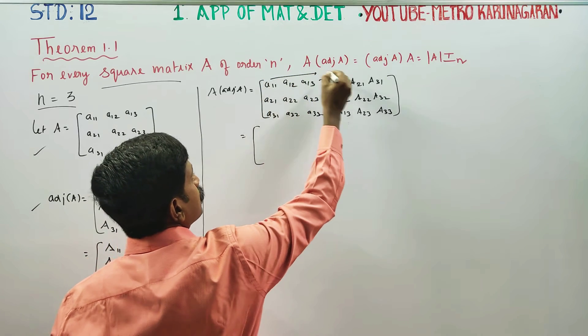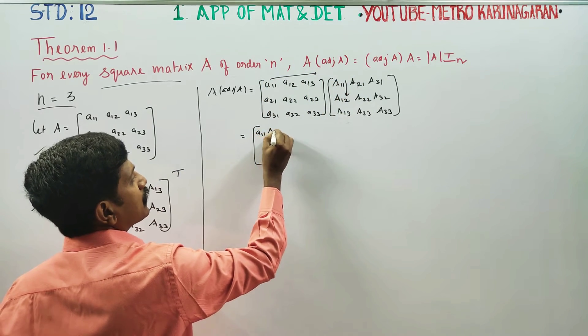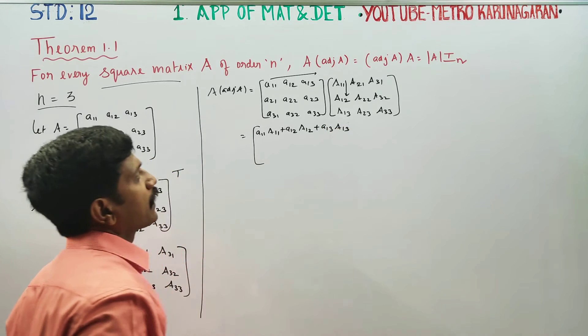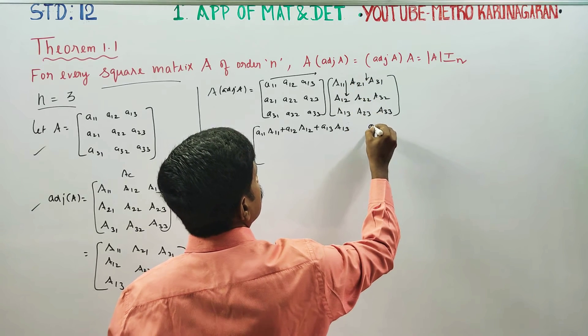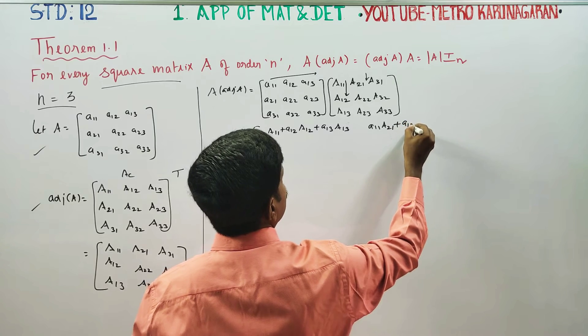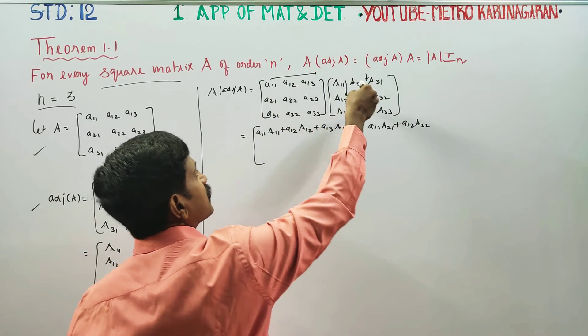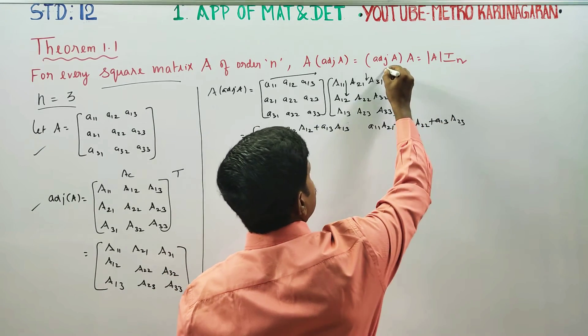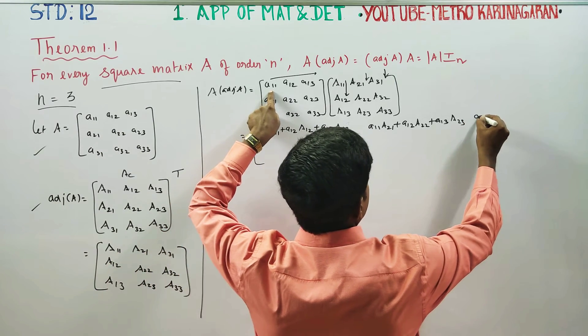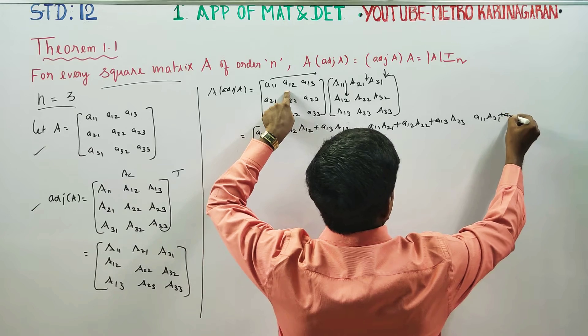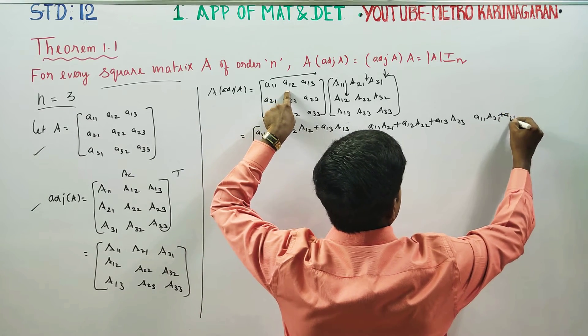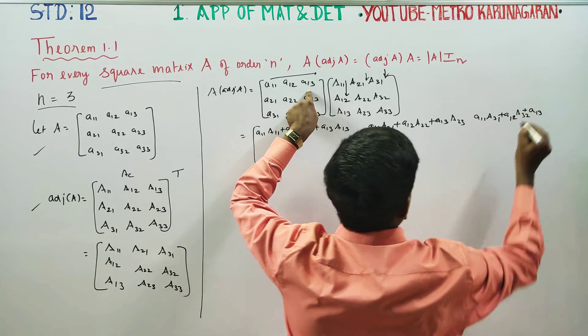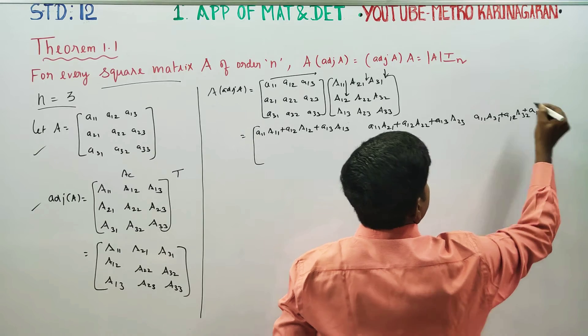Now multiply A into adjoint A. Row into column multiplication. First element: a11 times A11 plus a12 times A12 plus a13 times A13. Second element: a11 times A21 plus a12 times A22 plus a13 times A23. Third element: a11 times A31 plus a12 times A32 plus a13 times A33.